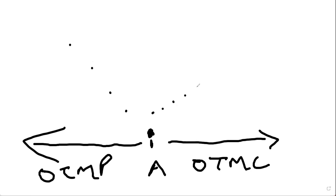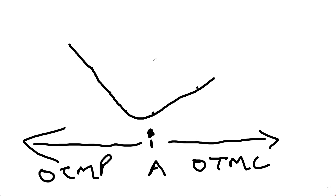For all OTM strikes, we plot the implied volatilities and then connect those dots. This is how the volatility skew — or volatility smile — looks. If you look at it, it resembles a smile, which is why it is called the volatility smile.